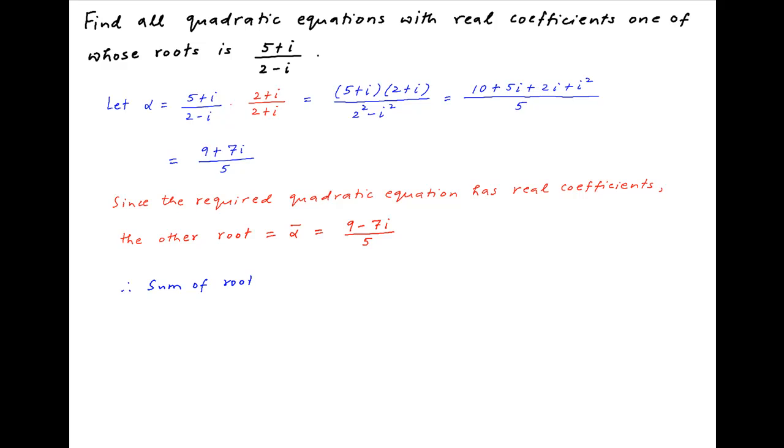Therefore, the sum of the roots of the required quadratic equation is equal to 9 plus 7i upon 5 plus 9 minus 7i upon 5, which simplifies to 18 upon 5.